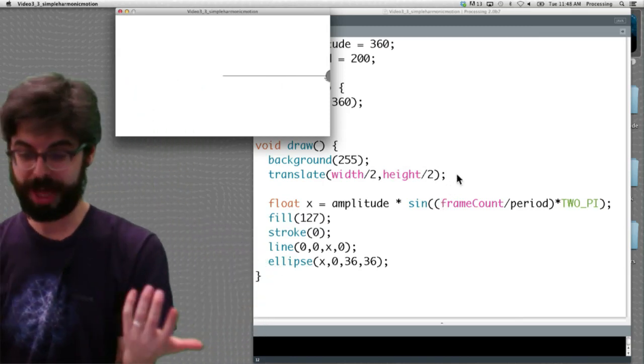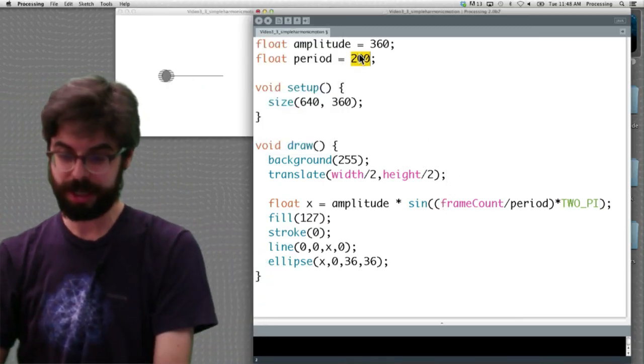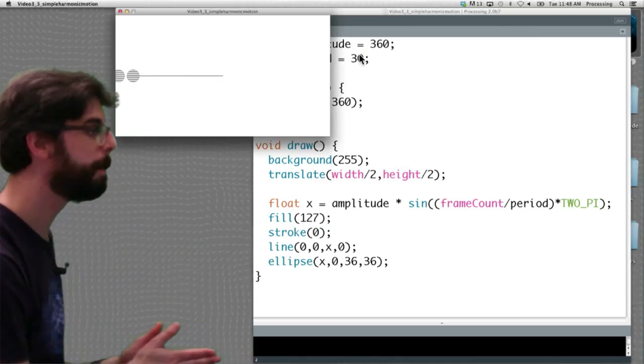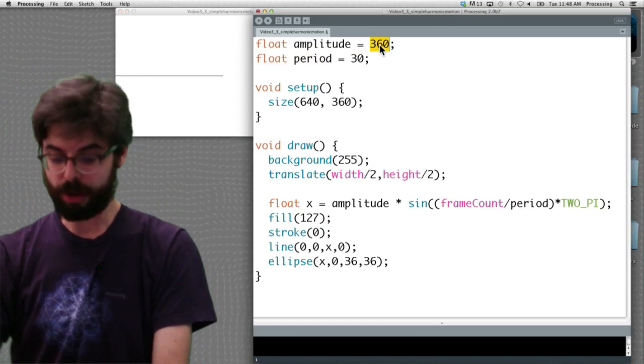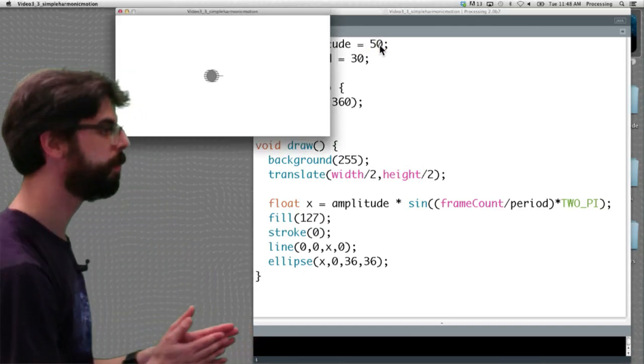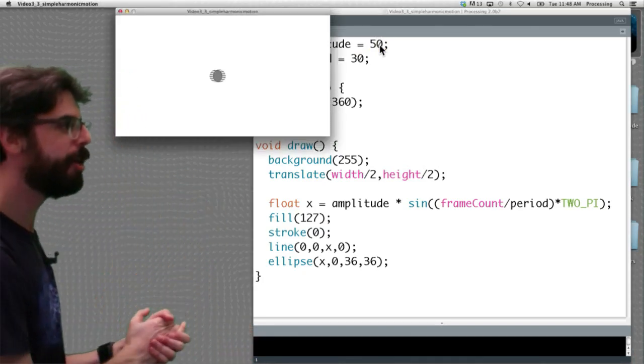Very simple with a period of 200. Now that can be flexible. We could adjust the period. You can see if I make a period of 30, it's going to oscillate back and forth much longer. If I make a smaller amplitude, it's going to just oscillate back and forth like that.